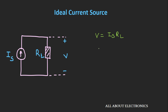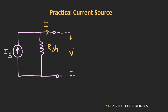In case of an ideal current source, there is no limit on the amount of voltage that appears across this source — or in other words, the ideal current source can deliver any amount of voltage to the load. But if you see any practical current source, there is a limitation on the amount of voltage that can appear across the current source, or in another way, there is a limitation on the amount of voltage that can be supplied to the load.